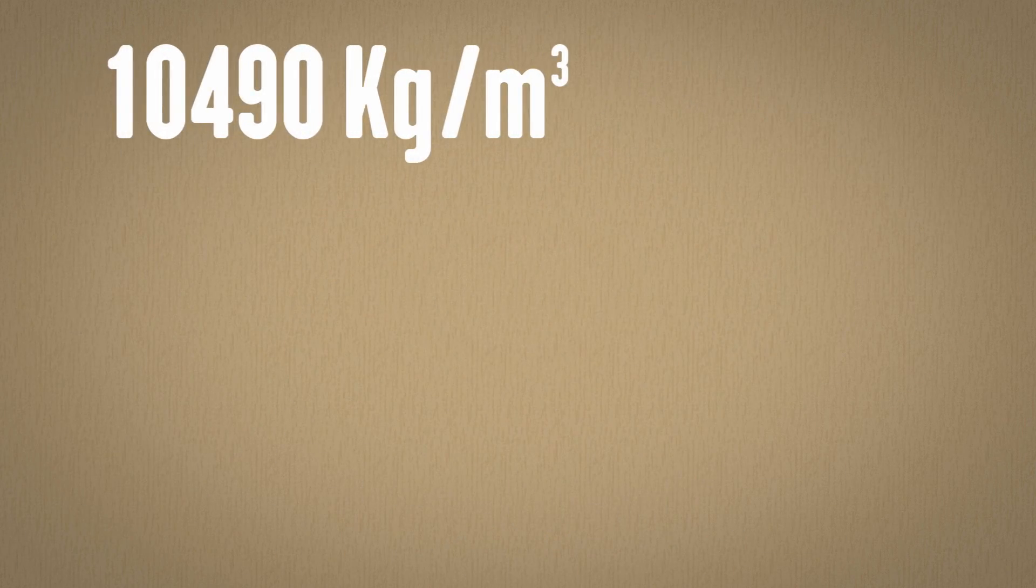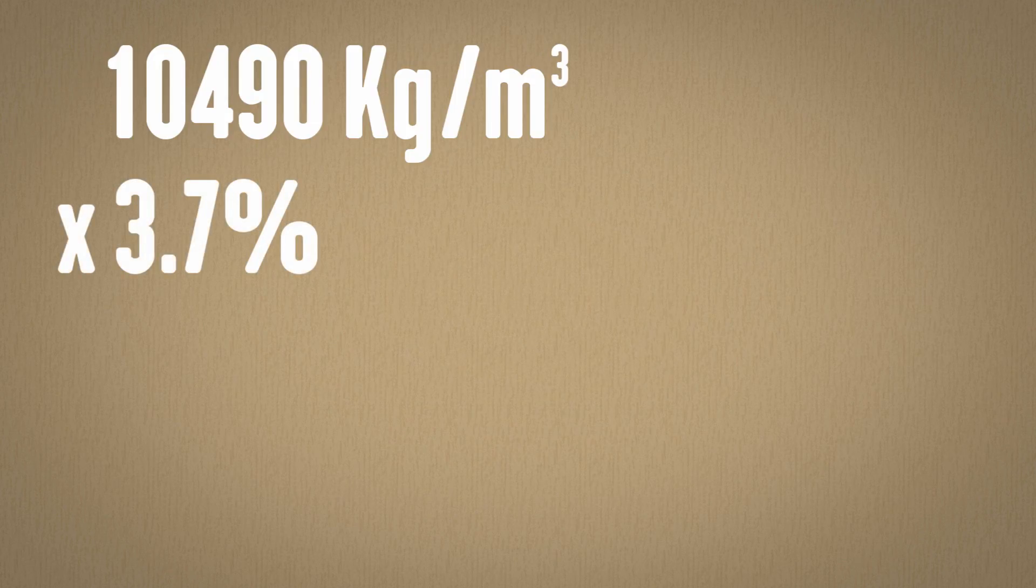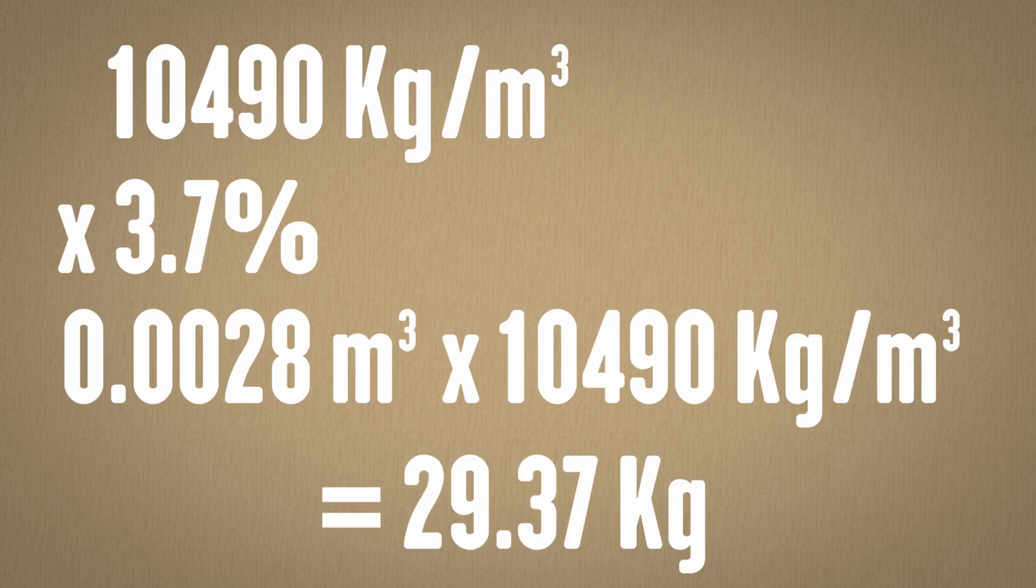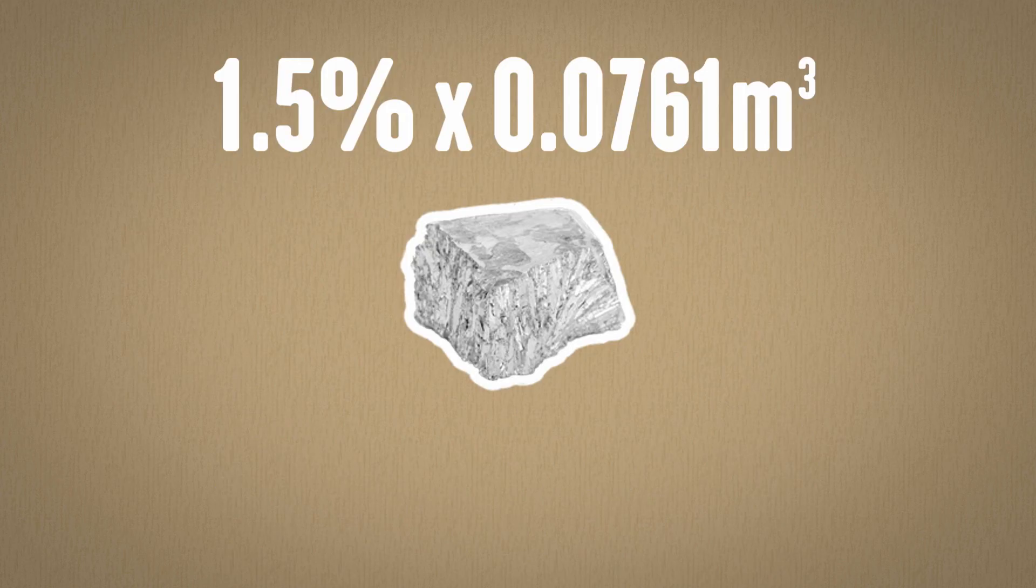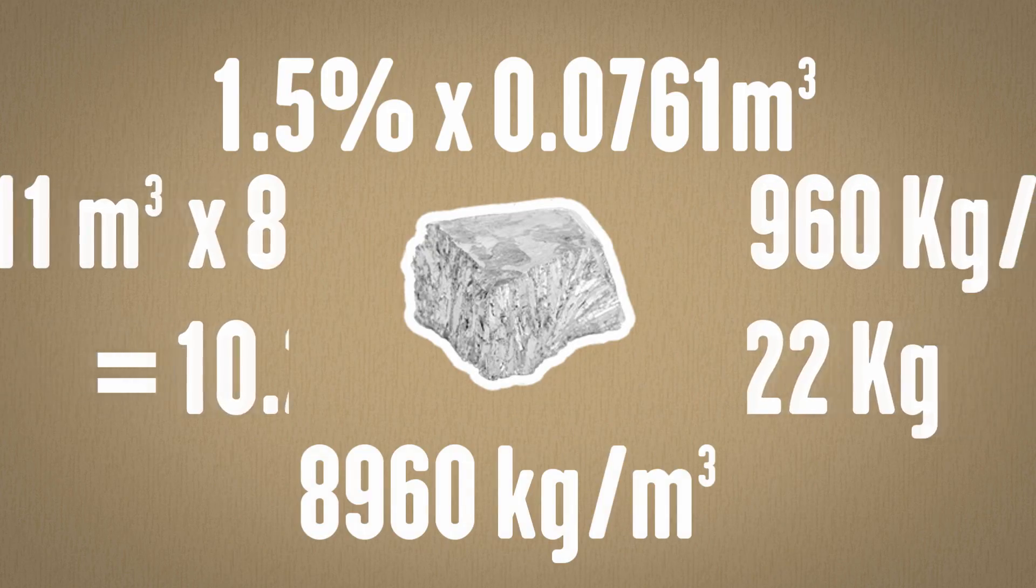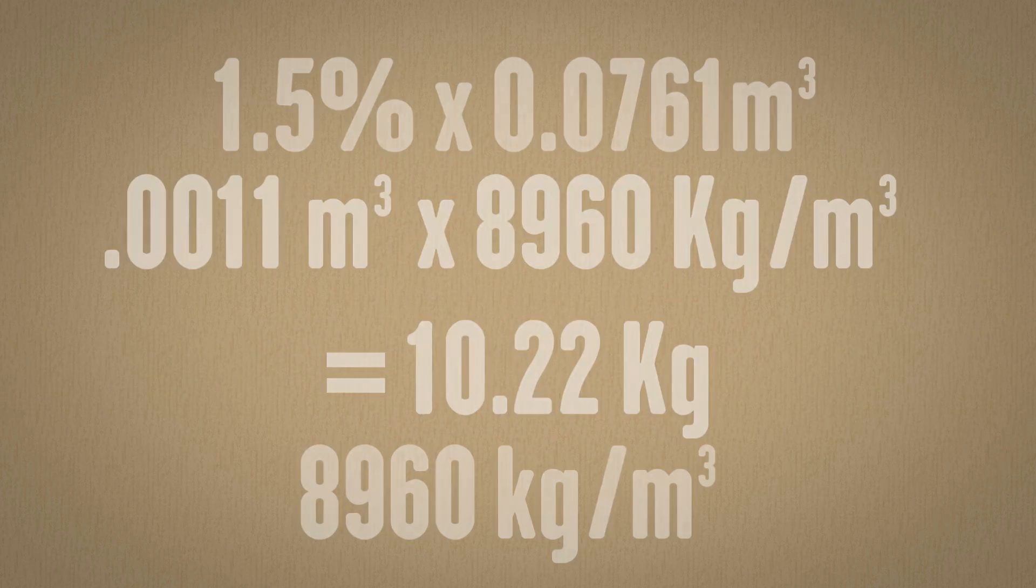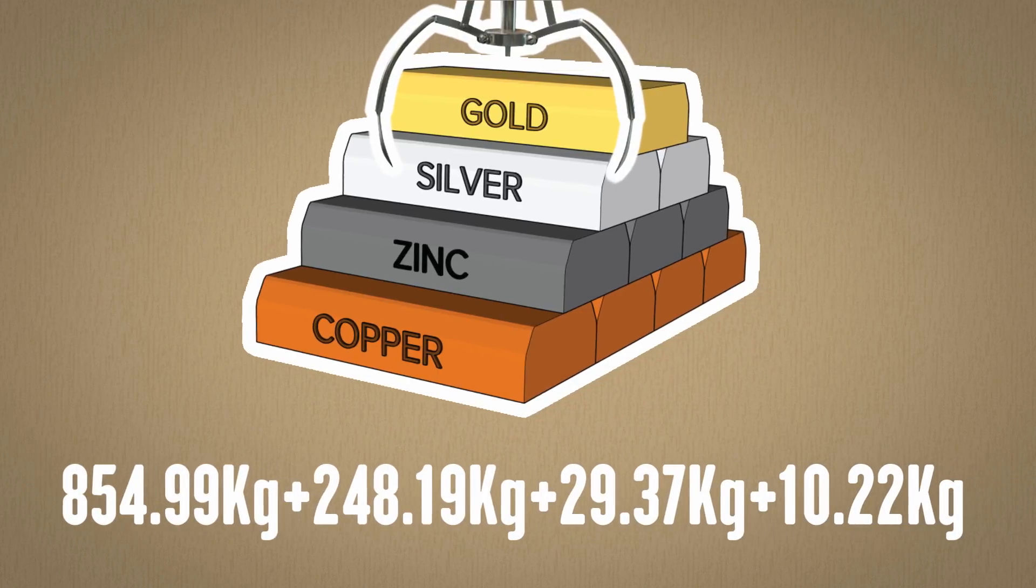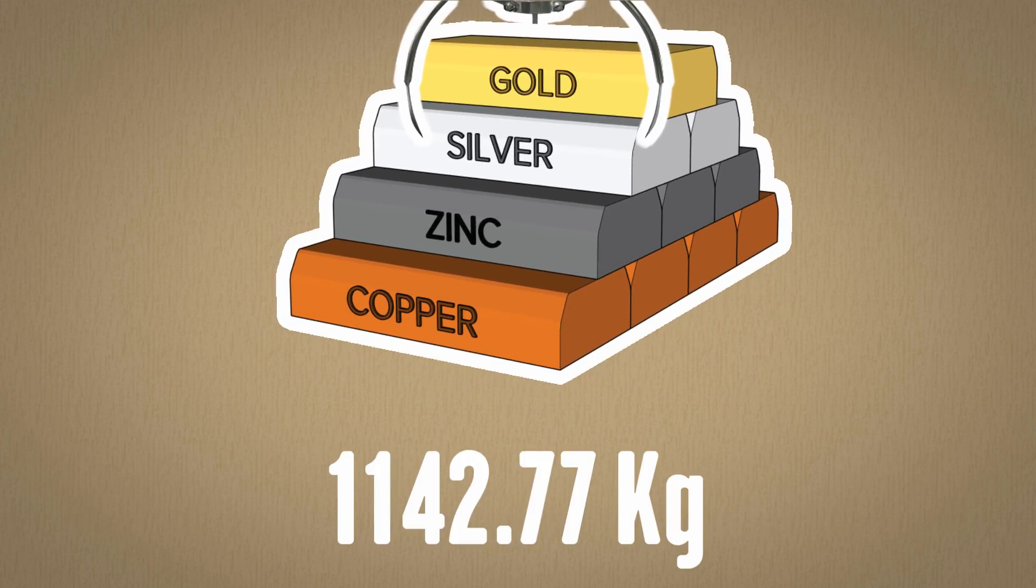Next is the silver, with a density of 10,490 kilograms per cubic meter, and 3.7% of mass. So 0.0028 cubic meters times 10,490 kilograms per cubic meter equals mass. Finally, we need zinc's volume of 1.5% total, and a density of 8,960. This gives us the total weight of pink gold peach. We add up all the masses of each type of metal, and we get 1,142.77 kilograms.